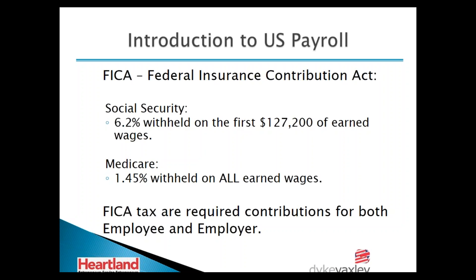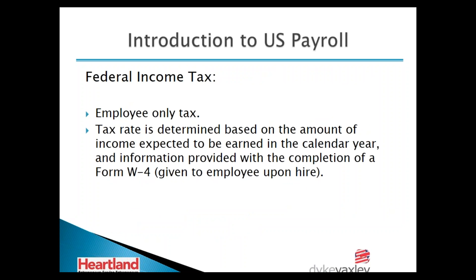Federal income tax is an employee contribution that must be withheld by the employer. The tax rate is determined based on the amount of income expected to be earned in the calendar year, as provided on the W-4 form — which every employee must fill out. The W-4 determines what tax percentage to withhold and remit to the government. Unlike the UK's PAYE system which can calculate tax exactly, in the US it is very rare that the withholding is exact. A tax return at year-end determines whether you paid too much or too little, with a true-up either way.